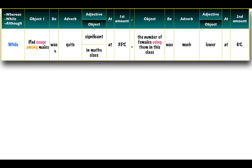We say 'was' because this pie chart is based in 2013, which is in the past. Then we add an adverb 'quite' and the adjective 'significant.' So: 'while iPad usage among males was quite significant in Maths class at 35%, the number of females using them in this class was much lower at 6%.' We use the verb-ing form 'using' because this is an active action. We say 'in this class' to avoid repeating 'Maths class.'